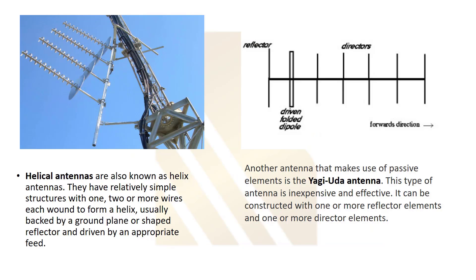We can see two types. The first one is a helical antenna. The name comes from the shape because it has wires that form a helix. As you see, these are like wires, and there is a reflector here.